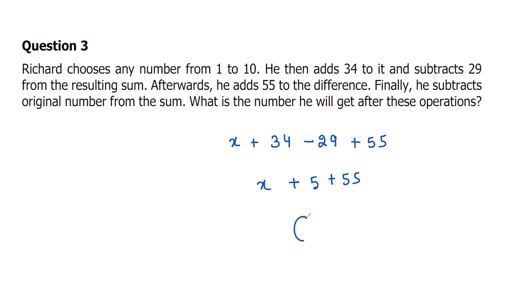So the sum is coming x plus 60. Then finally he subtracts the original number. If you subtract, then x and x cancel off, means whatever number you have chosen from 1 to 10 doesn't make any difference. So the answer is always 60, right? Let's go ahead.